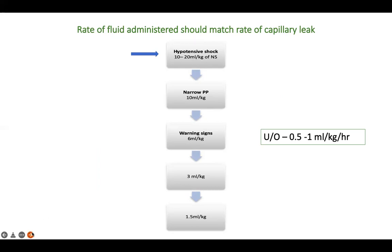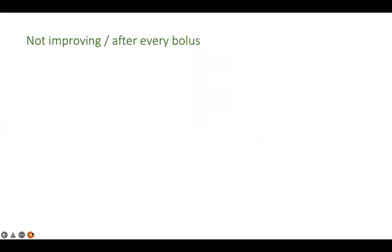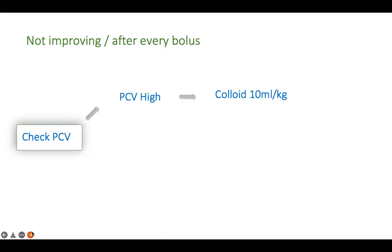If the patient is not responding to a fluid bolus, check the PCV after each bolus. If the PCV is rising despite boluses, it means IV fluid is leaking from the intravascular into the interstitial space. In this case, give a colloid — typically hetastarch 10 ml/kg over 1 hour — as colloids remain in the intravascular compartment longer than crystalloids like normal saline or Ringer's lactate.